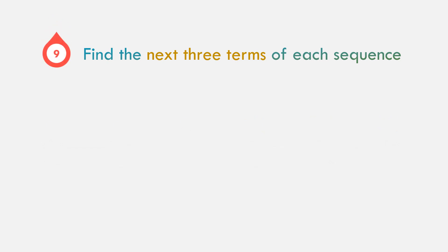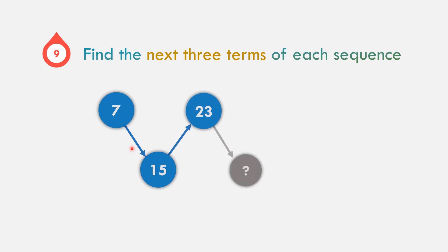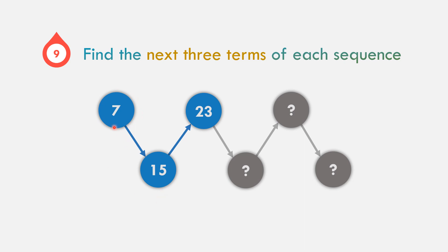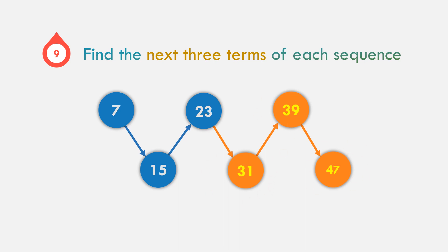In example number 9, find the next three terms of the sequence: 7, 15, 23. From 7 to 15 we add 8, and from 15 to 23 we add 8. So continuing to add 8: 23 plus 8 is 31, plus 8 is 39, plus 8 is 47. The next three terms are 31, 39, and 47.